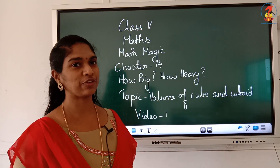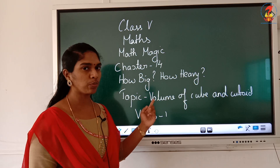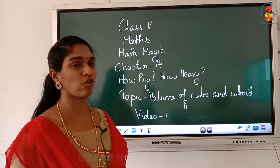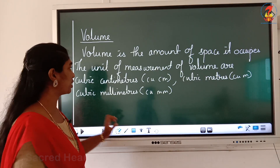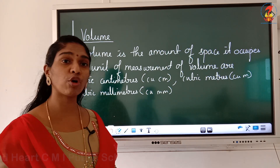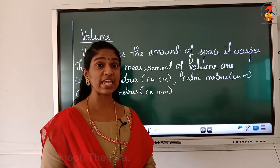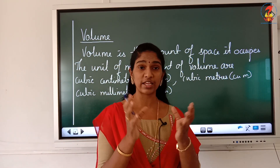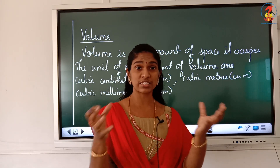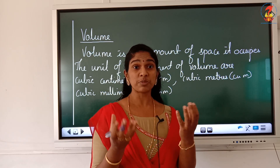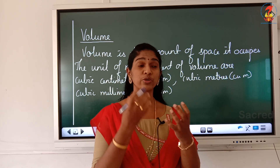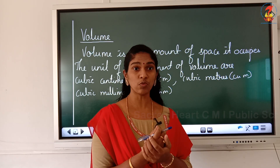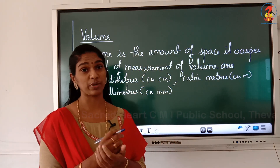Hi students, welcome back! Today we are starting with a new chapter — Chapter 14: How Big, How Heavy. In this chapter we are learning the concept of volume and how to find the volume of a cube and a cuboid. Before that, we should know what volume is. Volume is the amount of space an object occupies. If you take a container, a cube, or a cuboid, the space occupied by those 3D shapes is their volume.